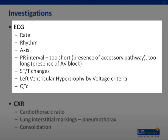On the ECG, we look specifically for rate, rhythm, and axis. If the PR interval is too short, it suggests an accessory pathway. If the PR interval is too long, it suggests the presence of an AV block. Look for ST-T changes that may suggest the presence of myocardial ischemia. Review the height of the R waves in the lateral chest leads — these may be abnormally tall in left ventricular hypertrophy. Calculate the corrected QT interval, which will be shown shortly.